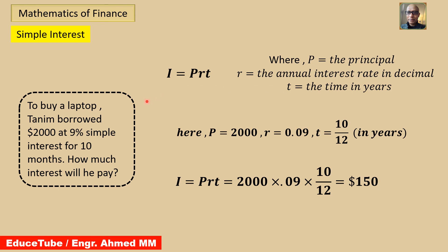For one year, interest is calculated by principal times R — just PR. If we put T equal to 1, it comes to principal times interest rate. So interest will be PR for one year. But for any period other than one year, we must use the formula with T, so interest will be PRT.